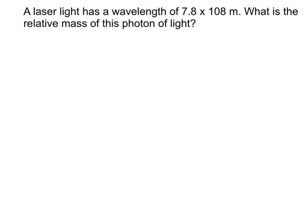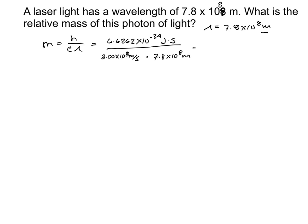We have a problem here that's asking us to calculate the mass of a photon of light. This photon of light has a wavelength of 7.8 times 10 to the 8th meters. So we have a wavelength that's been provided, and we know that we want to solve for mass. We know that mass and wavelength are related by this equation that we saw earlier. And we know that h is a constant, 6.6262 times 10 to the negative 34 joules times seconds. And we know that our c is the speed of light, meters per second. And our wavelength here, which is already in meters, is going to be 7.8 times 10 to the 8th meters. So we're going to go ahead and plug that into our calculator.